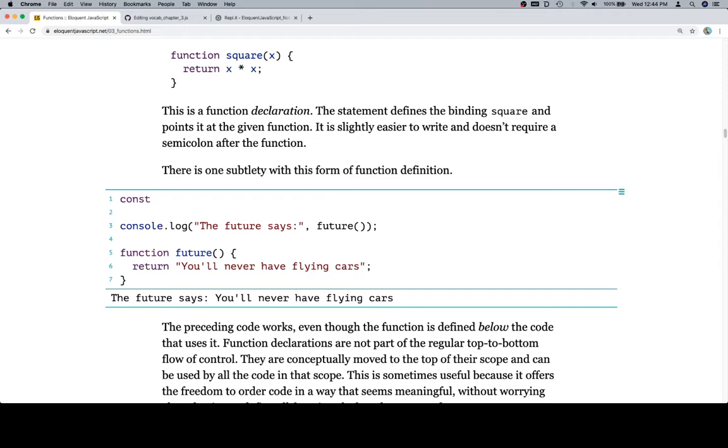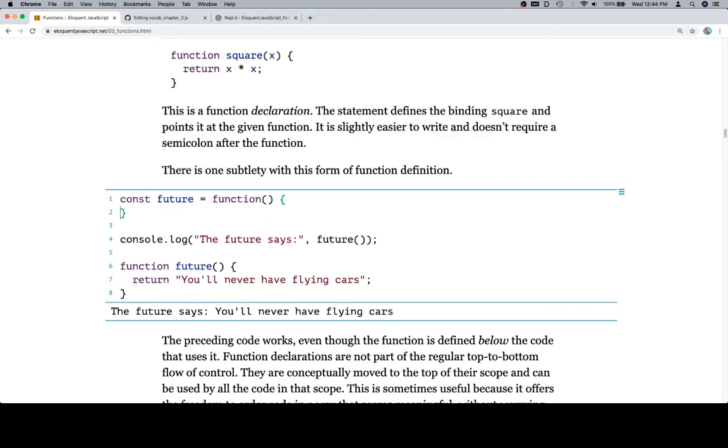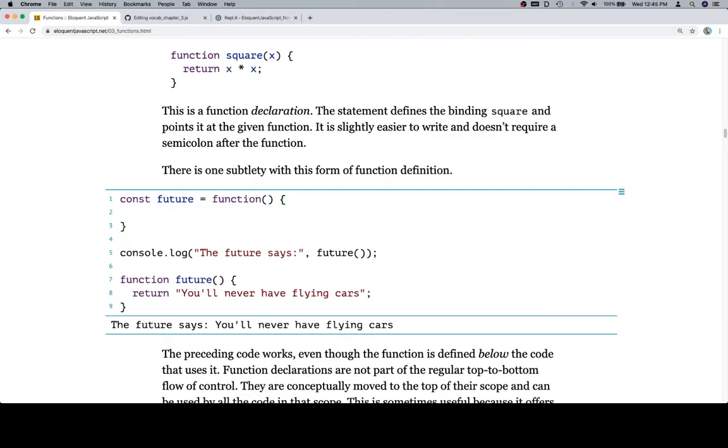So the other version would be, we would say something like, const future is equal to a function. It takes no parameters, and it's going to return you'll never have flying cars. Well, that's kind of a sad story. We're going to comment out this, which I found out yesterday I cannot comment out in the usual fashion I'm accustomed to, which is to say highlight the whole thing and hit a button to make it all comment out.